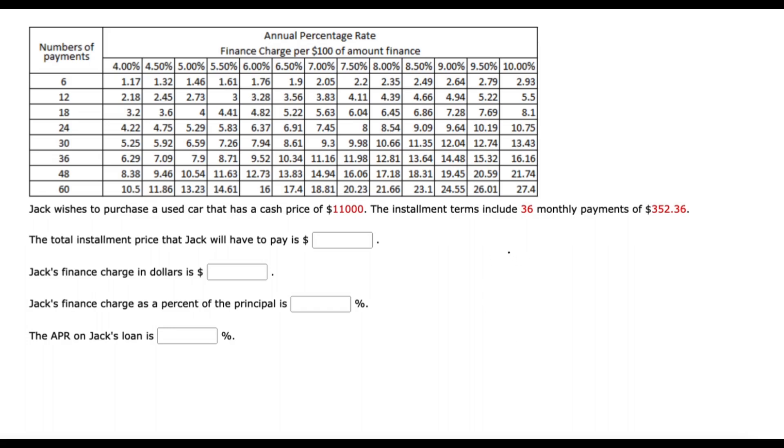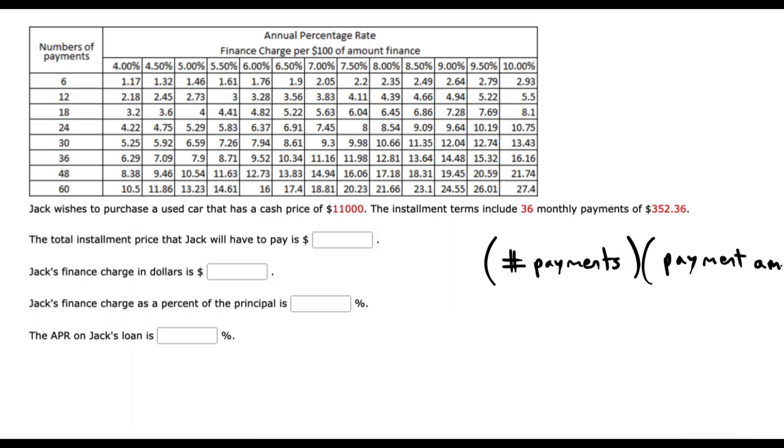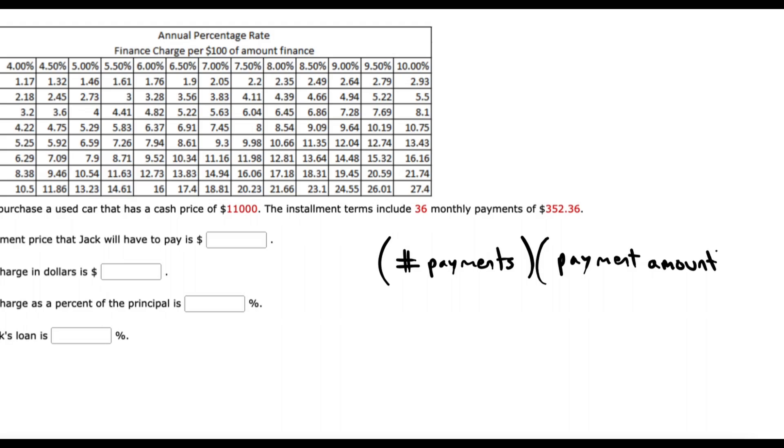We want to multiply the number of payments times the payment amount in order to get the total installment price.